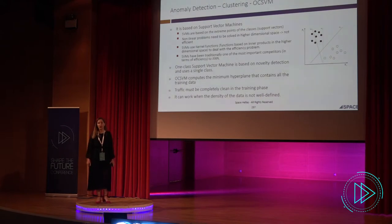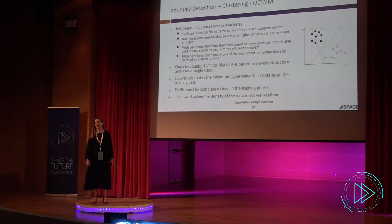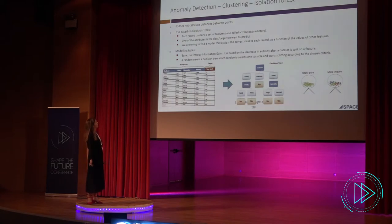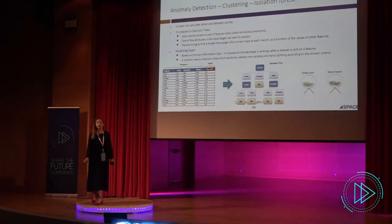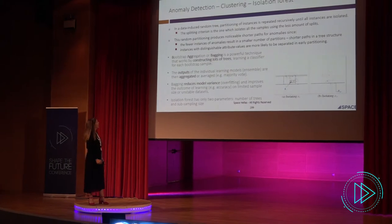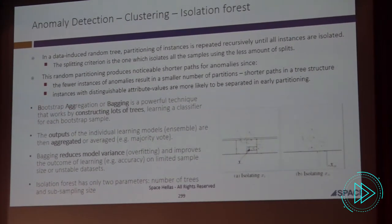We also have one-class support vector machines, which are based on classical support vector machines but also on novelty detection, where we only have one class. The advantage of using one-class SVM is that we can use it when the density of data is not well defined. Isolation forest is based on decision trees. We use one target class — the one we want to predict — and it is based on bootstrap aggregation, or bagging. Bagging is a technique where, by constructing many trees, the classifier learns from bootstrap samples.